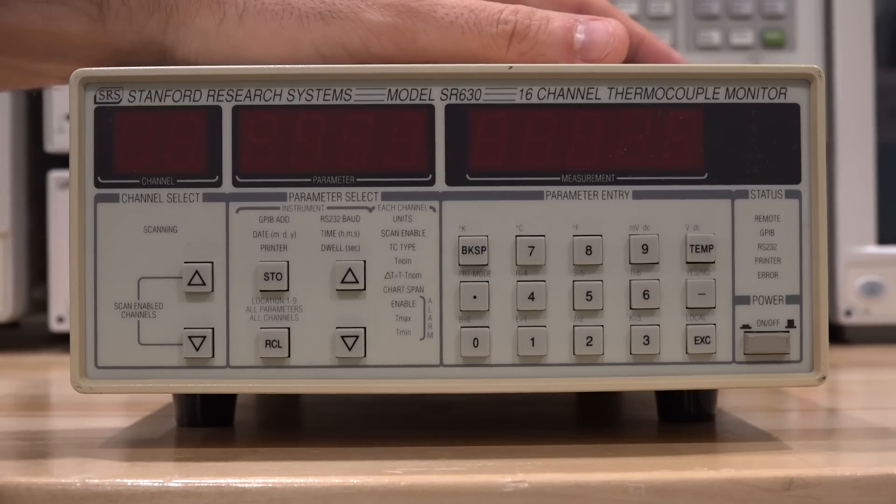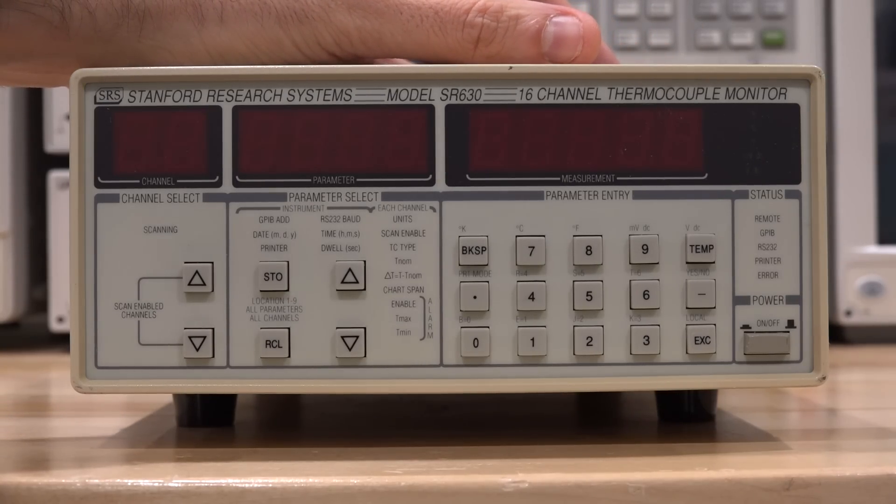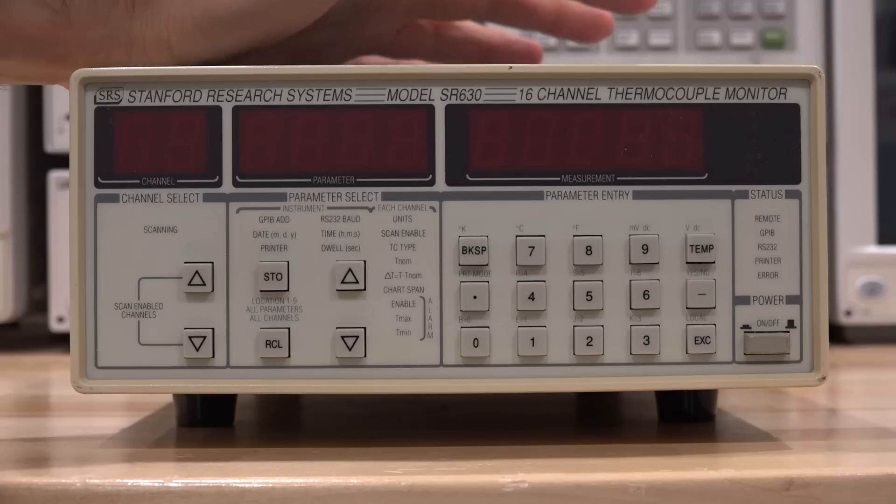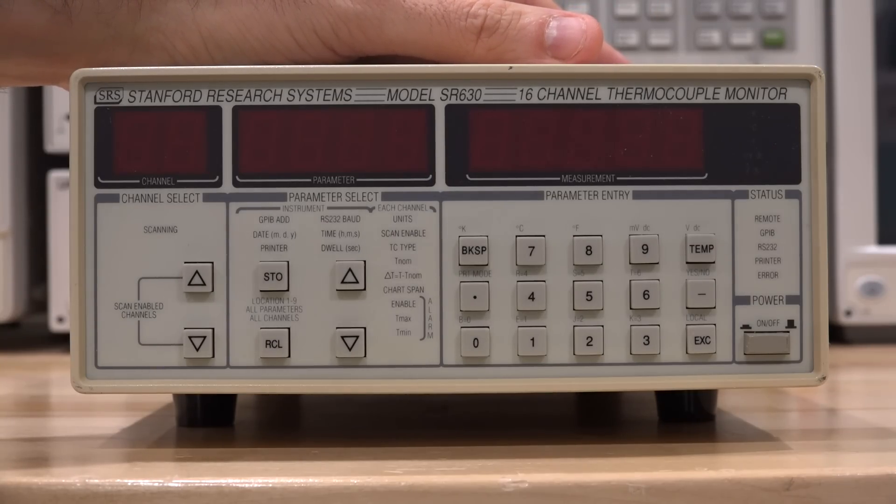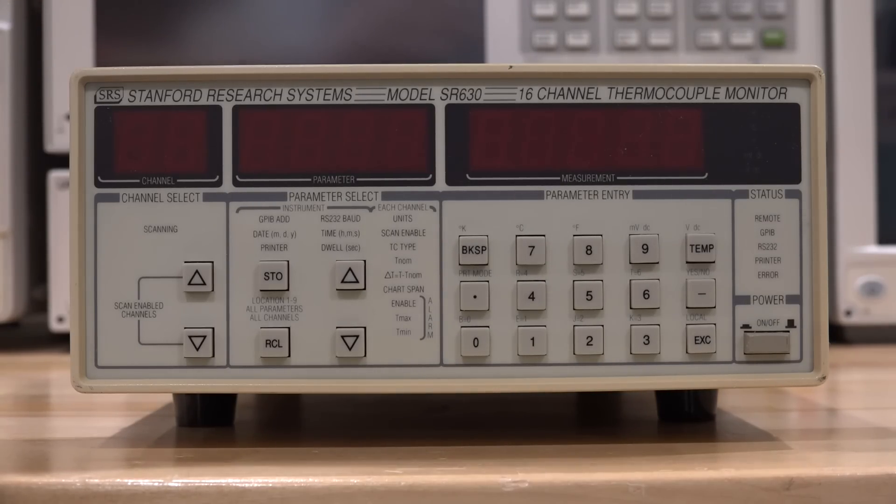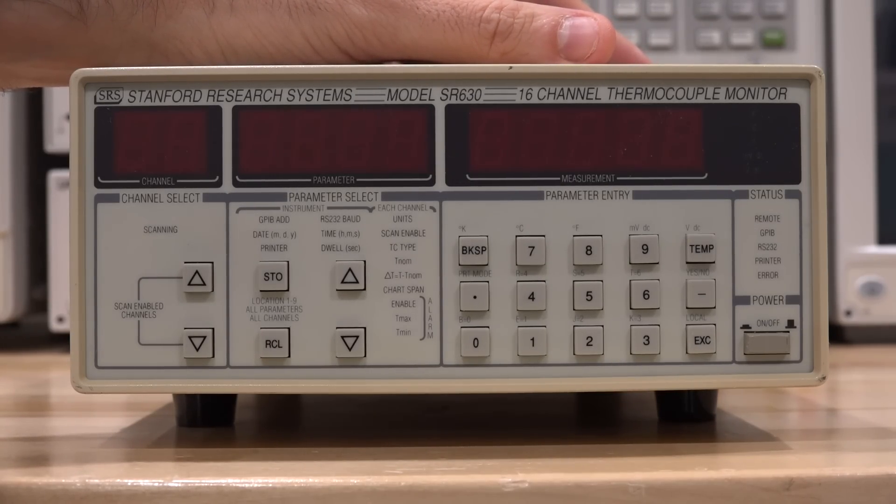Hi, welcome to the Noise Path. We're going to take a look at this Stanford Research model SR630, which is a 16-channel thermocouple monitor. I bought this because a refrigerator kept failing and different areas were at different temperatures. I was getting really frustrated conveying this problem to the people who were supposed to repair it, so I looked around to see what was the best way to capture a bunch of thermocouple points from inside at a reasonable cost, and this one came up.